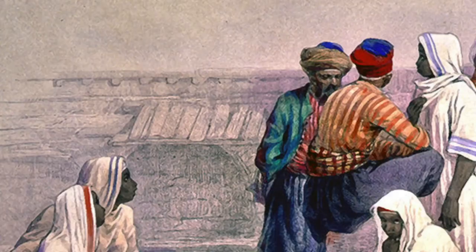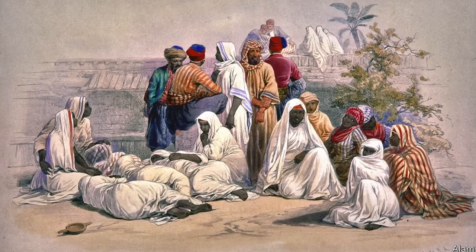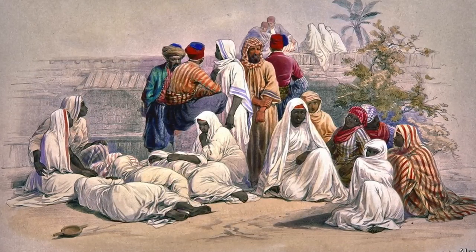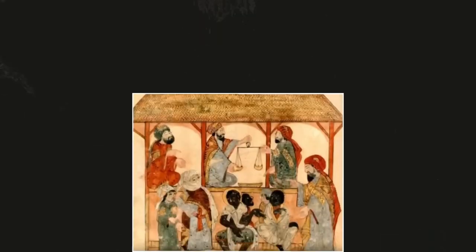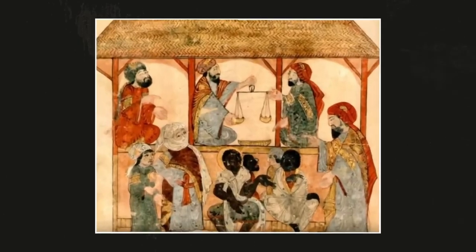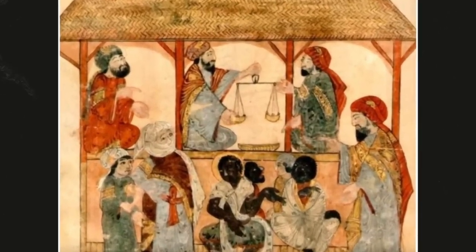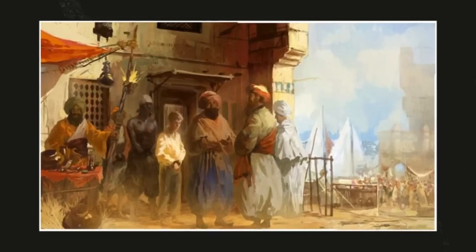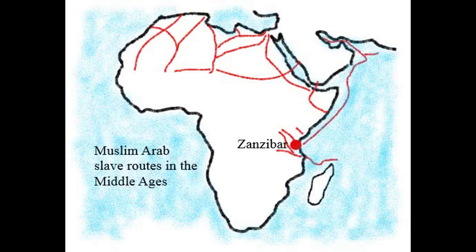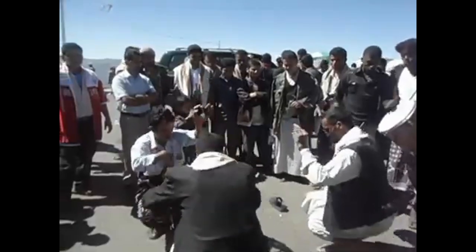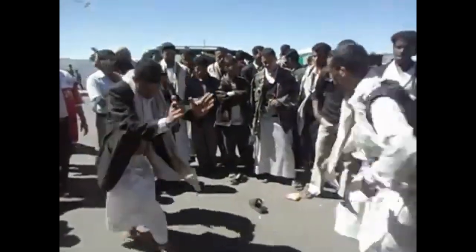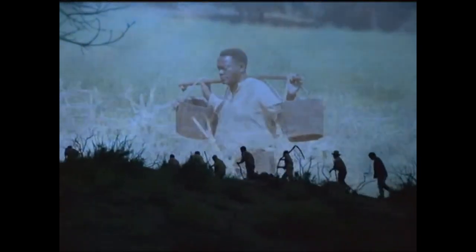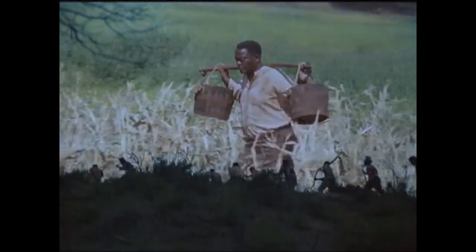The Zanj Rebellion became the most famous African slave revolt in the Middle East. Cultural evidence endures today in the Persian Gulf, where descendants of people from the Swahili coast perform the traditional Leiwah and Tanbura music and dance from East African regions. The Maizma is also performed by Afro-Arabs in eastern Saudi Arabia, akin to practices in present-day East Africa.